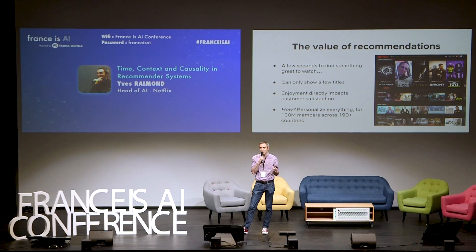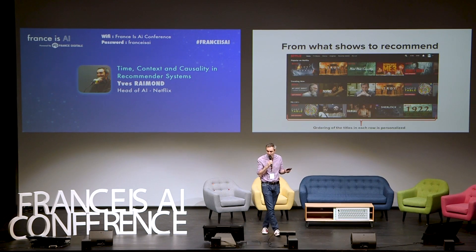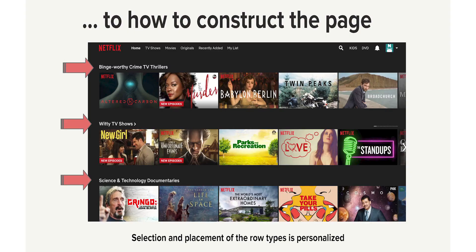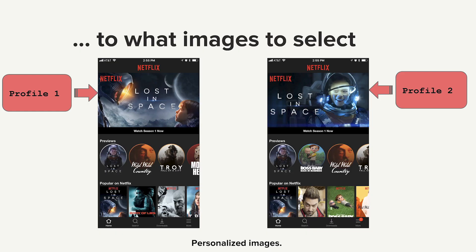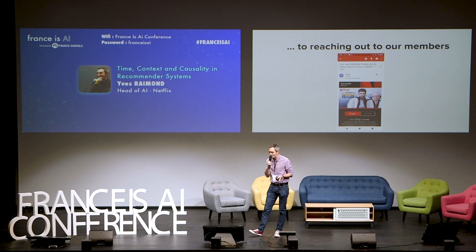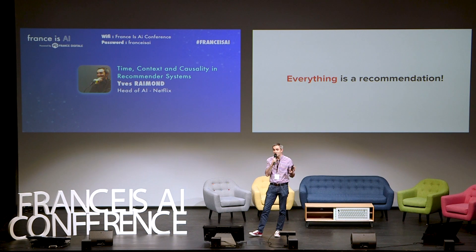The key is to treat almost every opportunity as an opportunity to provide personalized recommendations. Within the rows you see on your Netflix homepage, every TV show and movie is ranked in a personalized way. Even the rows themselves and the ones we pick and rank on your page are personalized. Even the images we use to showcase a particular title to you are personalized. Any email or push notification that we send is personalized as well — we treat every pixel as an opportunity to help you find something great to watch.